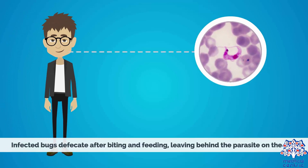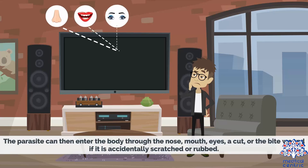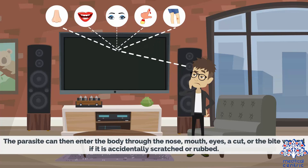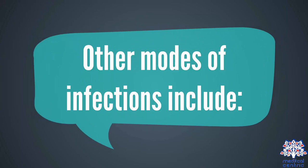Infected bugs defecate after biting and feeding, leaving behind the parasite on the skin. The parasite can then enter the body through the nose, mouth, eyes, a cut, or the bite wound if it is accidentally scratched or rubbed.